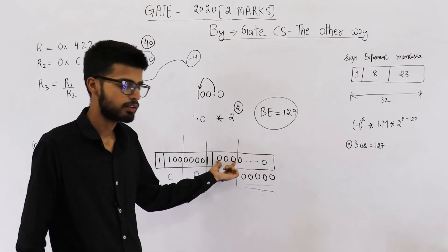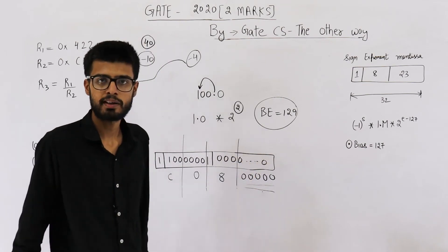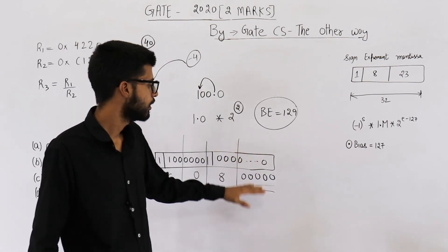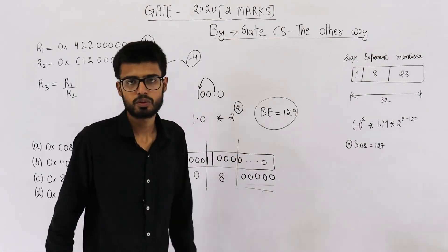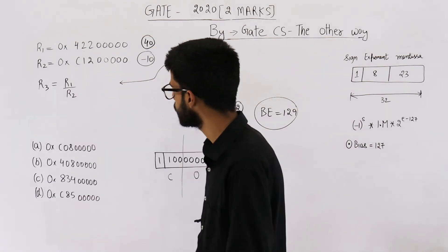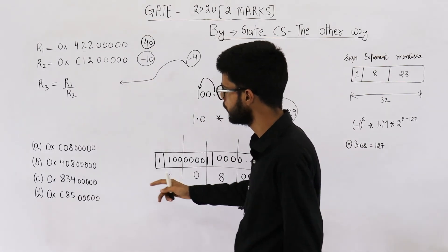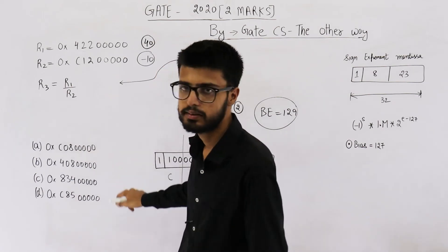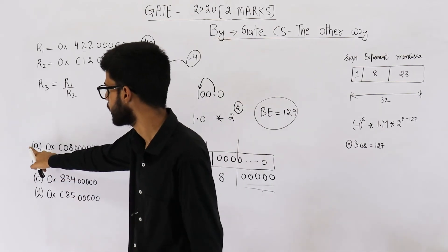We already have 3, so we are remaining with 5 more digits, and all of these digits will be 0s. See, these are 23 zeros - 3 are already taken, so we are left with 20 bits. So 20 bits will just translate to 5 zeros in hexadecimal. So your answer is option A: C08 followed by 0s. This is the correct answer.